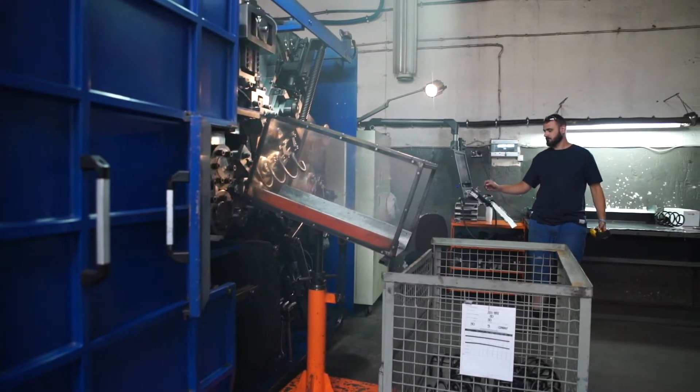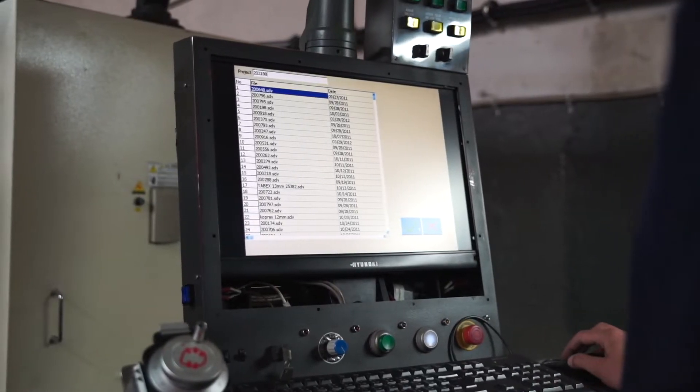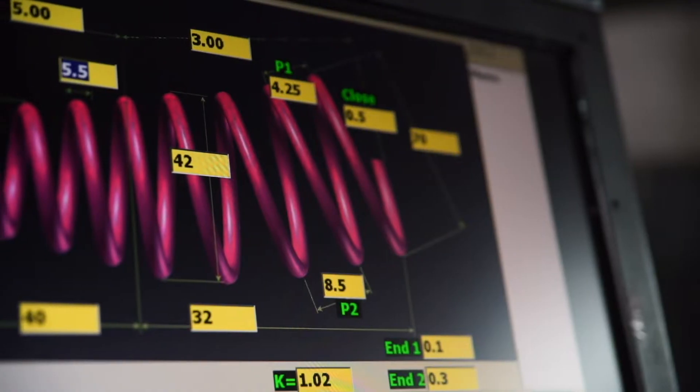Spring coiling is the first stage of production. The machine operator selects the shape and parameters of the spring according to the design.